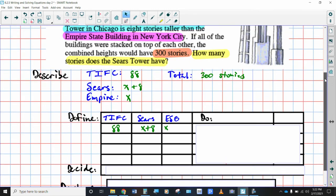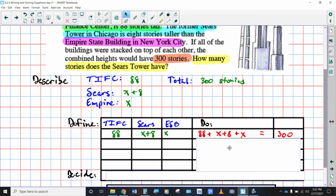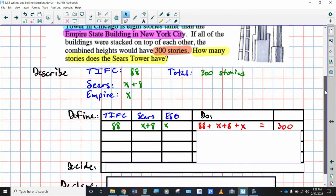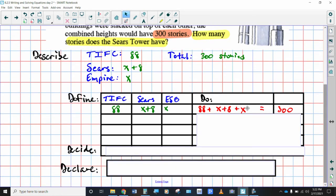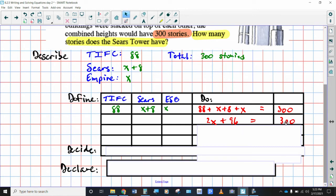Two International Finance Center is 88 stories tall. Sears Tower is, actually Empire State Building is X and the Sears Tower is X plus eight. Now normally, I would do the X first and then use that to start off and then go through the guess and check. But we are setting this up as an equation. So note here that the equation is made up of, here's your 88 for your Two International Finance Center. Here's your X plus eight. That's your Sears Tower. And here's the height of the Empire State Building X. And when you add all three of those together, you get 300 stories.